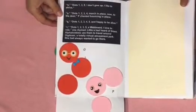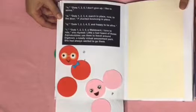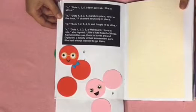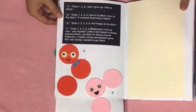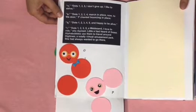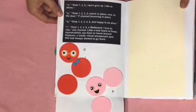O dots one, three, five. I don't give up. I like to strive. P dots one, two, three, four. March in place. Now to the door, P chanted bouncing in place. Q dots one, two, three, four, five. And happy to be alive. R dots one, two, three, five. A waveboard. I love to ride, she rhymed.